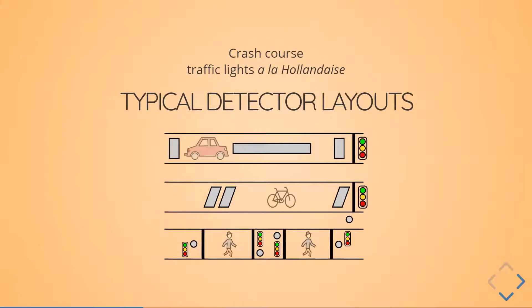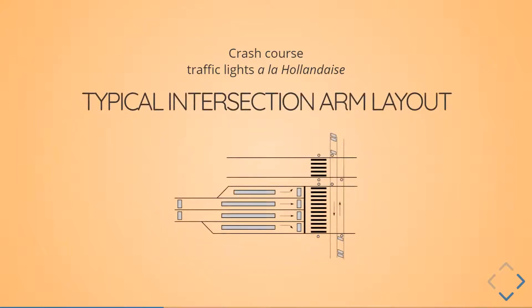Here's what a typical detector layout may look like. For a car, you might have a small detector at the stop line, a long one, and then a short one around 60 or 80 meters from the stop line. For cyclists, there's usually a button and an induction loop detector, and often one or two detectors about 20 meters from the stop line. For pedestrians, there are buttons. This is relatively a lot of detection compared to other European cases, and this is still kind of modest — nowadays there's even more.